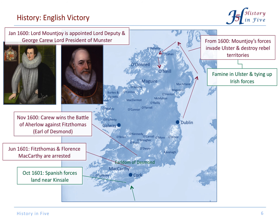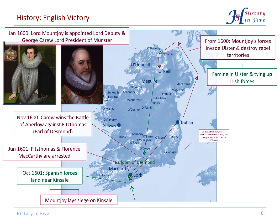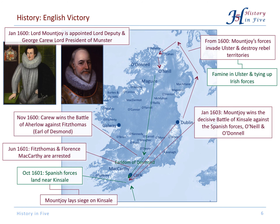Spanish forces landed near Kinsale in the south, as a last hope for the Irish. Mountjoy immediately laid siege on Kinsale, and then O'Neill and other Irish leaders marched south with nearly all their troops. But they lost the Battle of Kinsale, and that meant the Spanish forces and the Irish were out. The war was won for England.